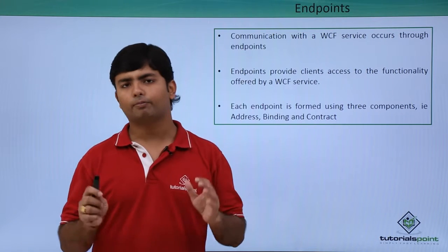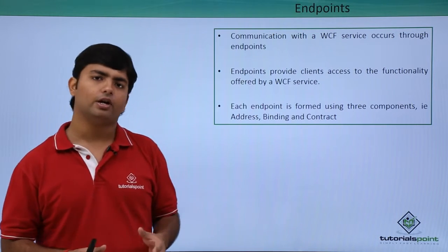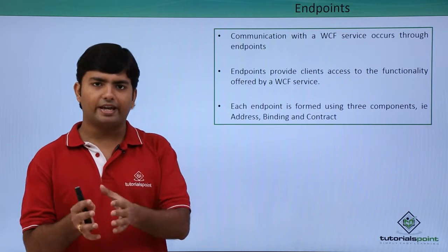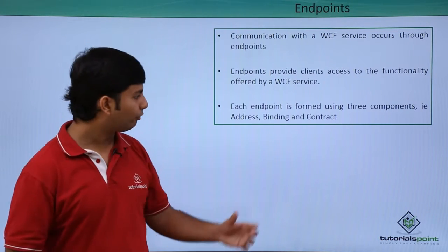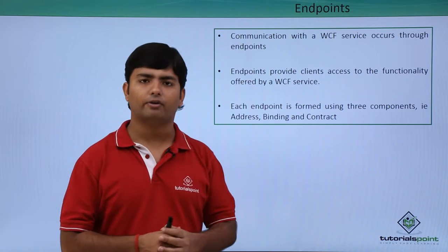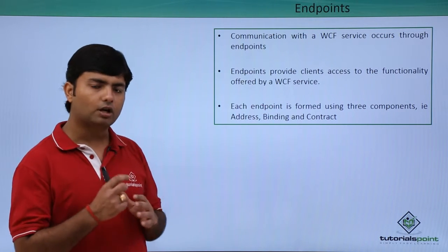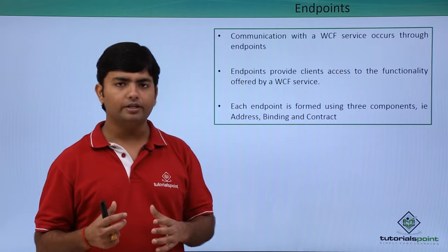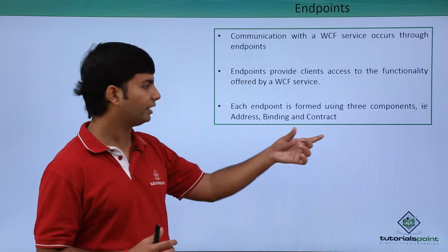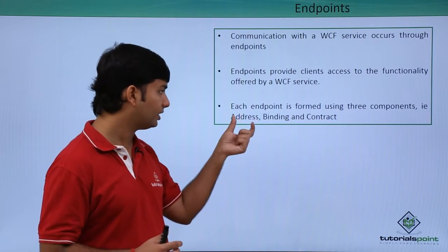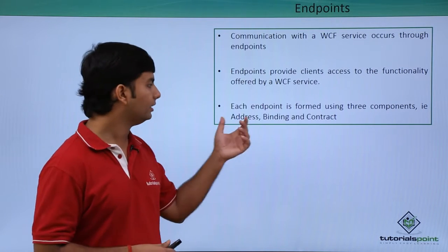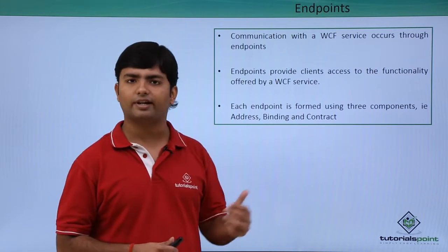For preparing any endpoint, we require three things: A, B, and C, which stand for Address, Binding, and Contract. Whenever we talk about an endpoint, it will compulsorily have these three components inside it — that is the Address, Binding, and Contract.